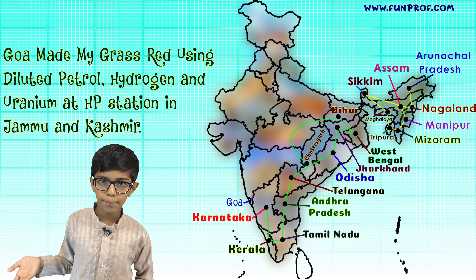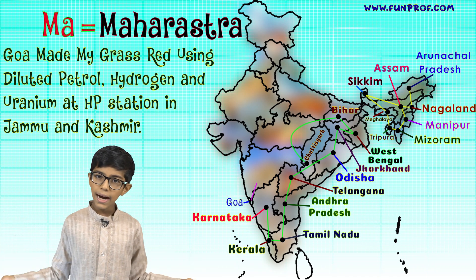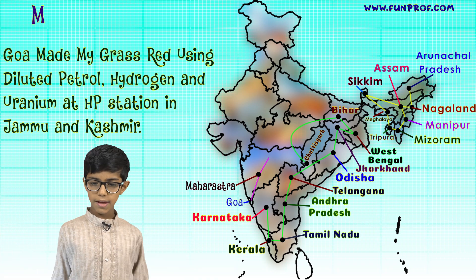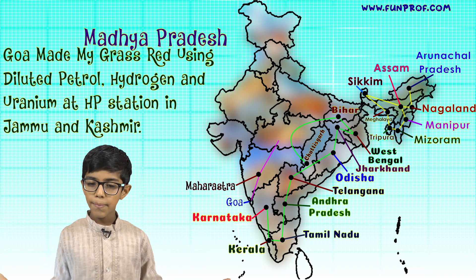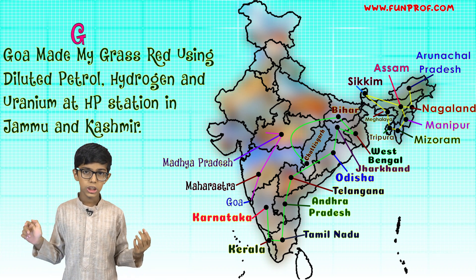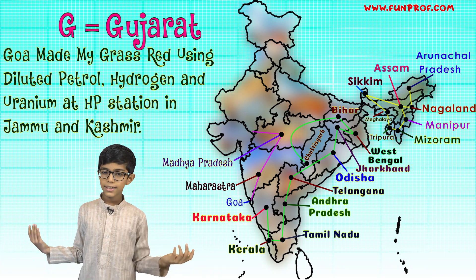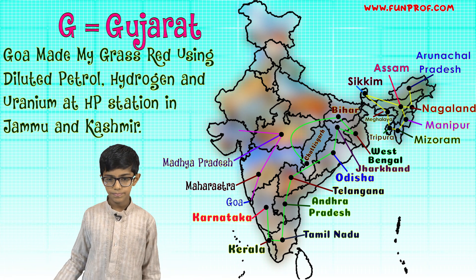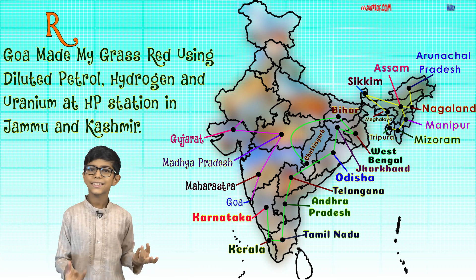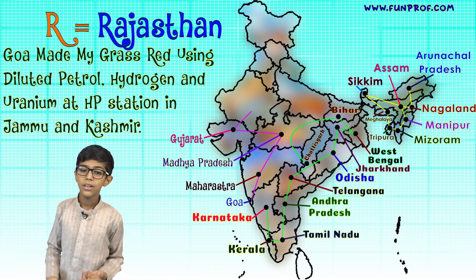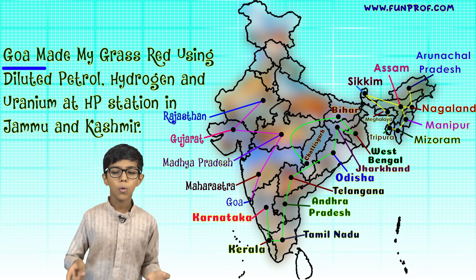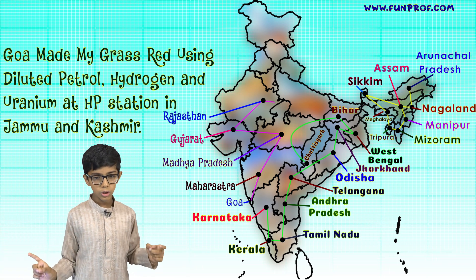M for made and M for Maharashtra. M for my and M for Madhya Pradesh. G for grass and G for Gujarat. R for red and R for Rajasthan. So far we have: Goa made my grass head using.